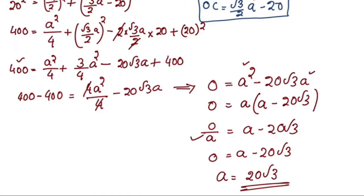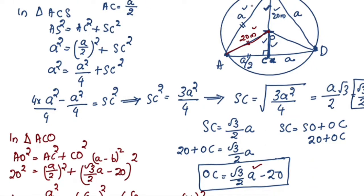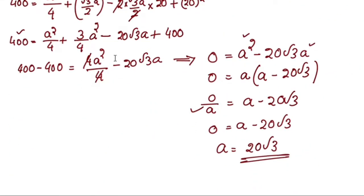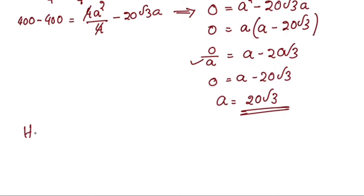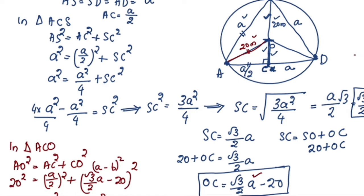The question asks: find the length of the string of each phone. A equals AS equals SD equals DE equals 20√3 meters. So the length of the string of each phone is 20√3 meters. This was question number 6, Exercise 10.4. The next video will cover Exercise 10.5.